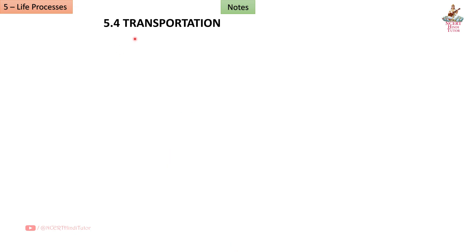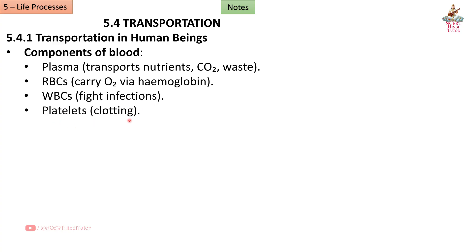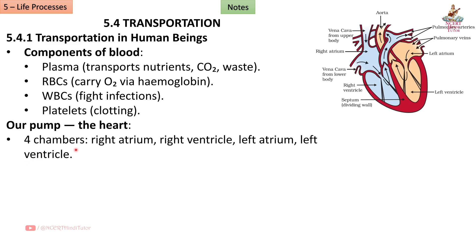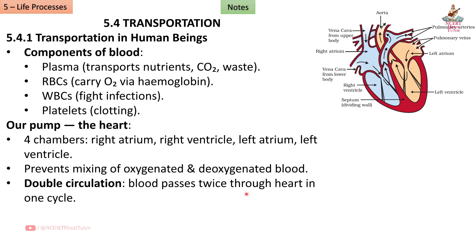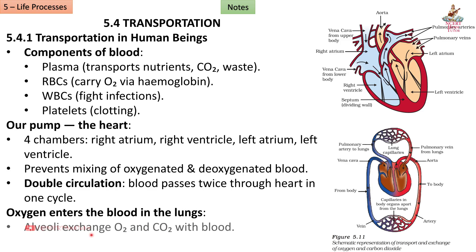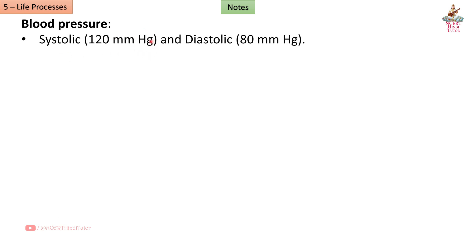Section 5.4.1: Transportation in Human Beings. Components of blood: plasma transports nutrients, CO₂, and waste; RBCs carry O₂ via haemoglobin; WBCs fight infections; platelets aid clotting. The heart has four chambers: right atrium, right ventricle, left atrium, and left ventricle — preventing mixing of oxygenated and deoxygenated blood. This is called double circulation, where blood passes twice through the heart in one cycle.